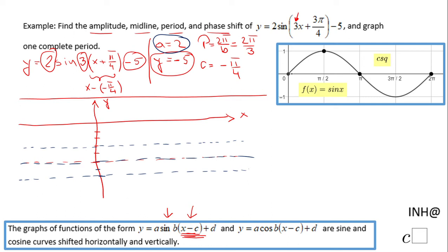I'll use the five-points technique. The first point, which on the parent graph is (0, 0), is shifted left by π/4 due to the phase shift and lies on the midline. So the first point is (−π/4, −5).